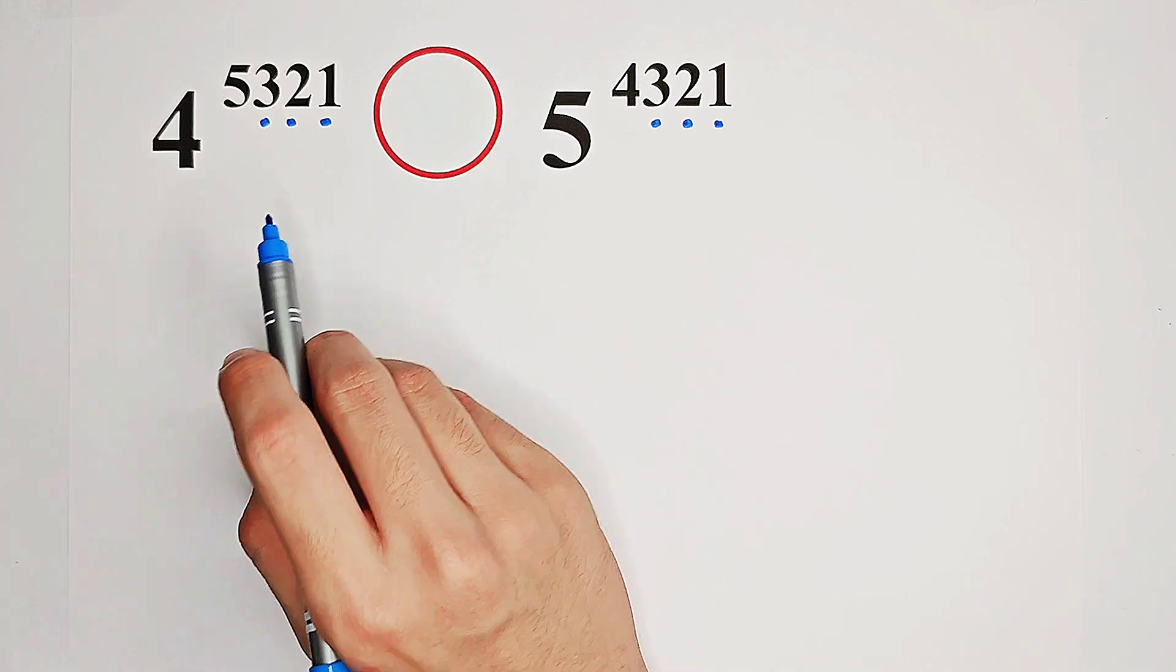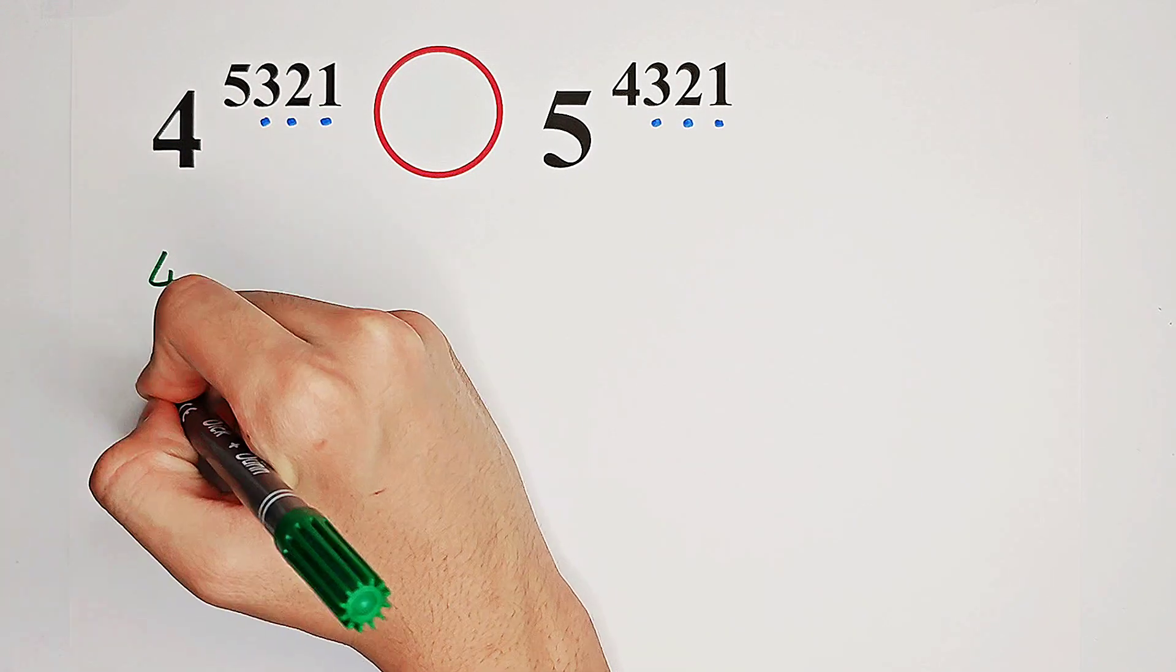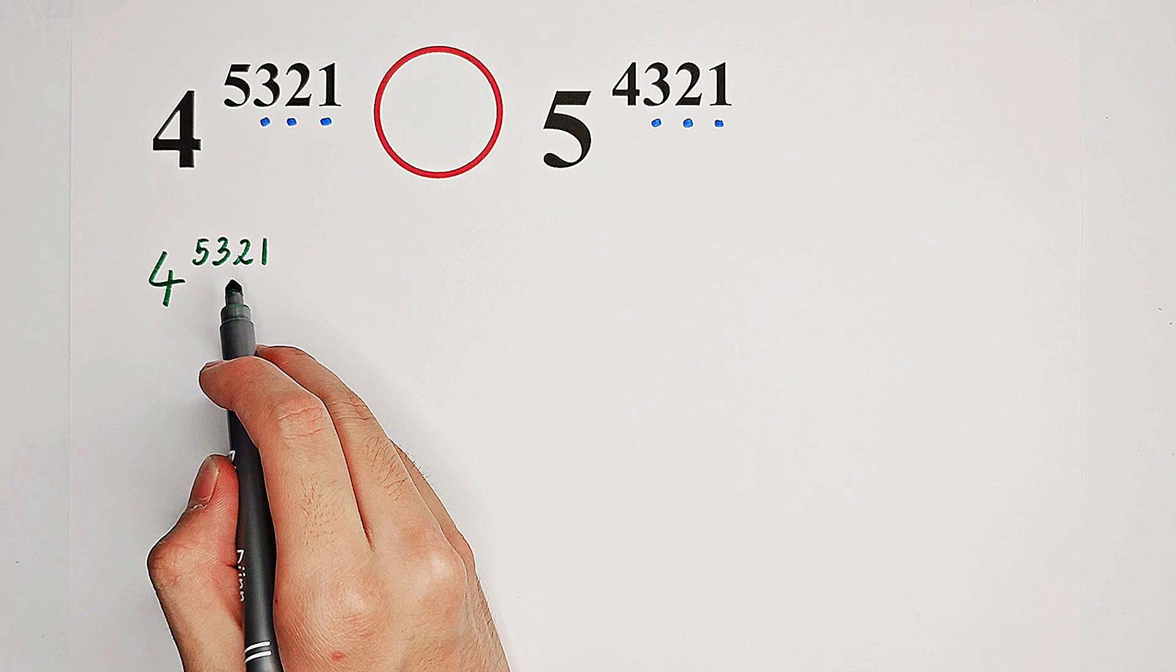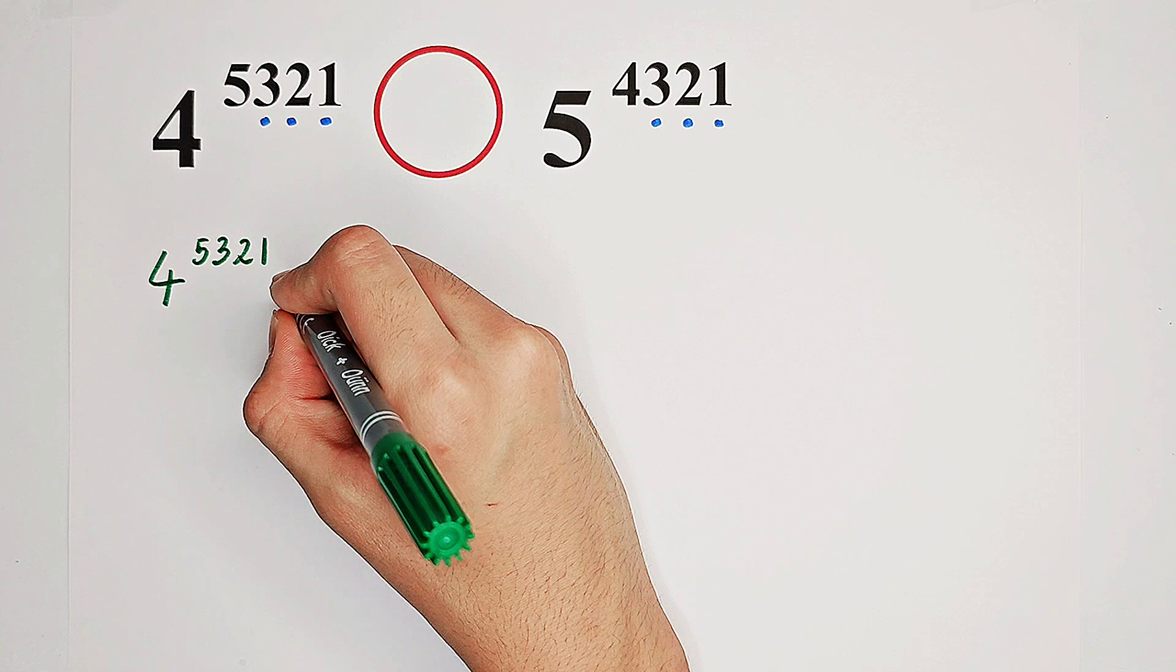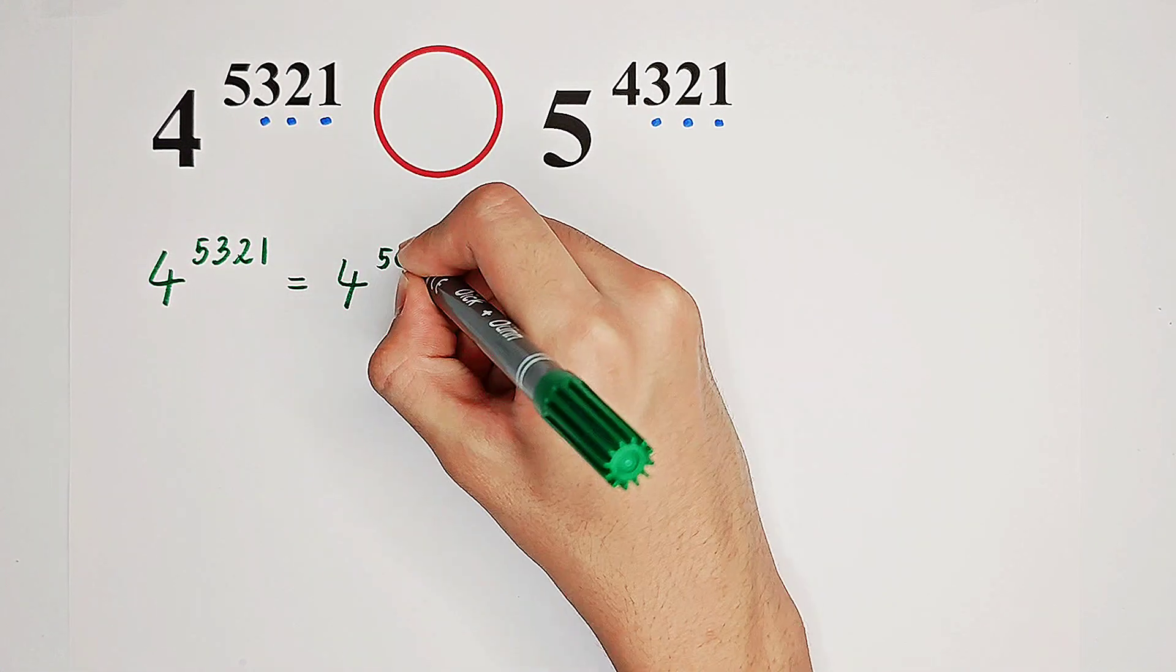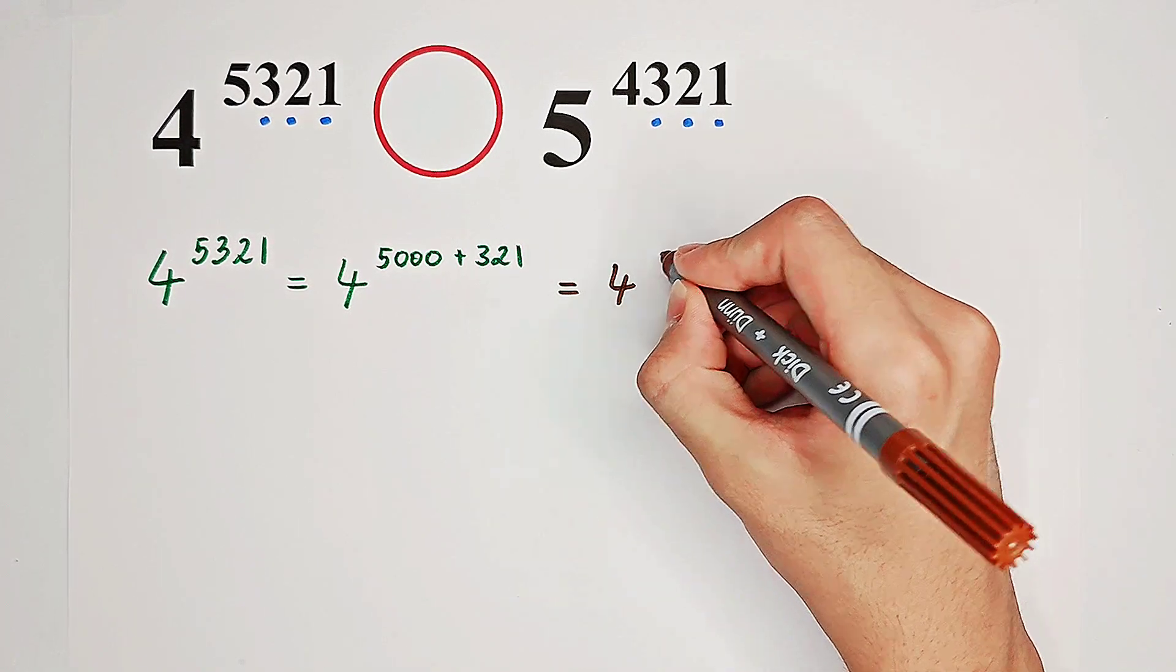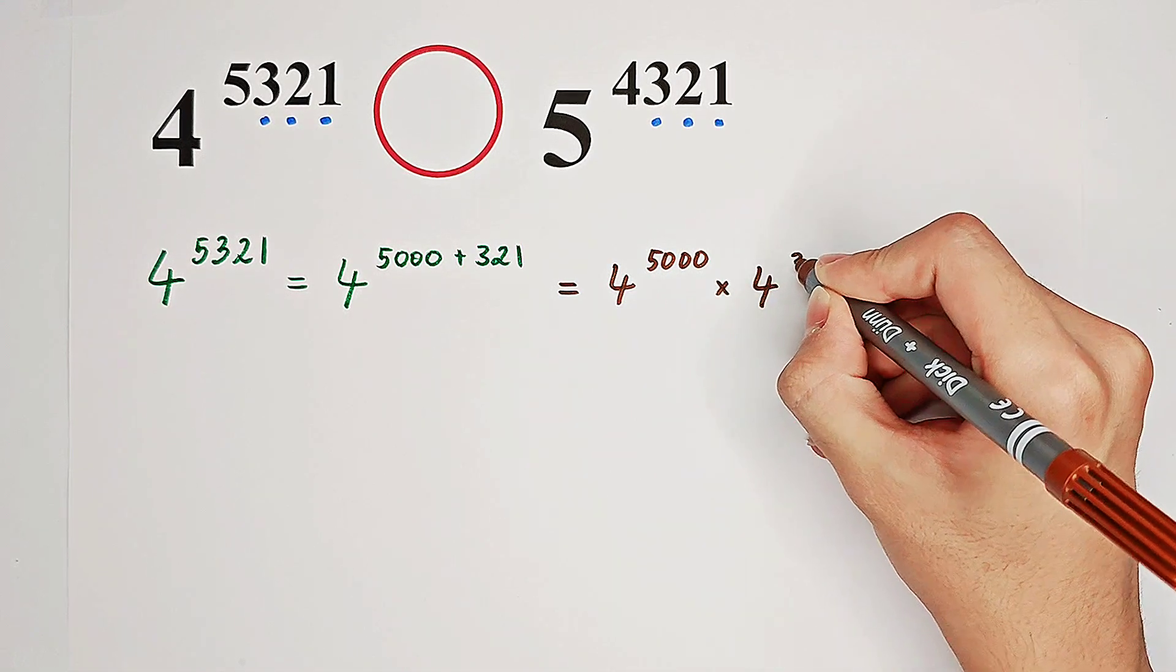So now, we can rewrite the left-hand side and the right-hand side. Let's have a look. 4 to the power of 5,321, this 5,321 can be written as 5,000 plus 321. Now, it is equal to 4 to the power of 5,000 times 4 to the power of 321.